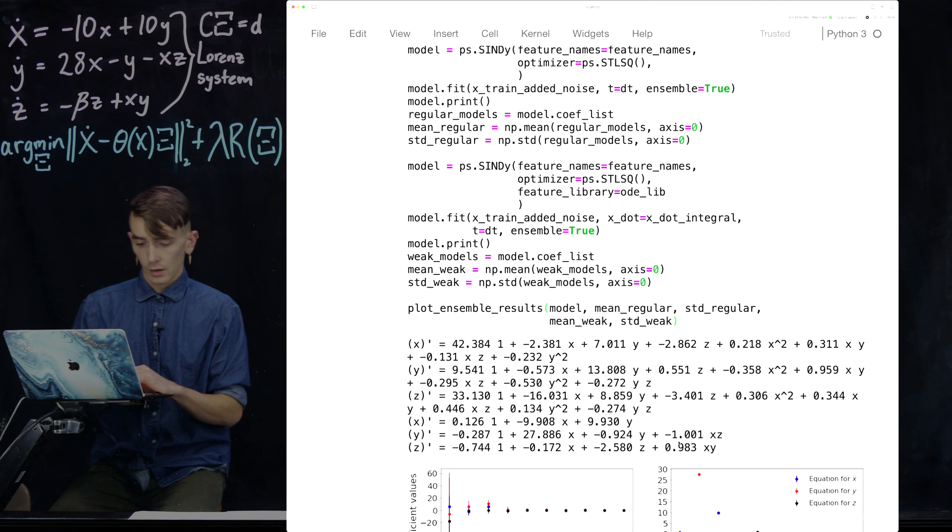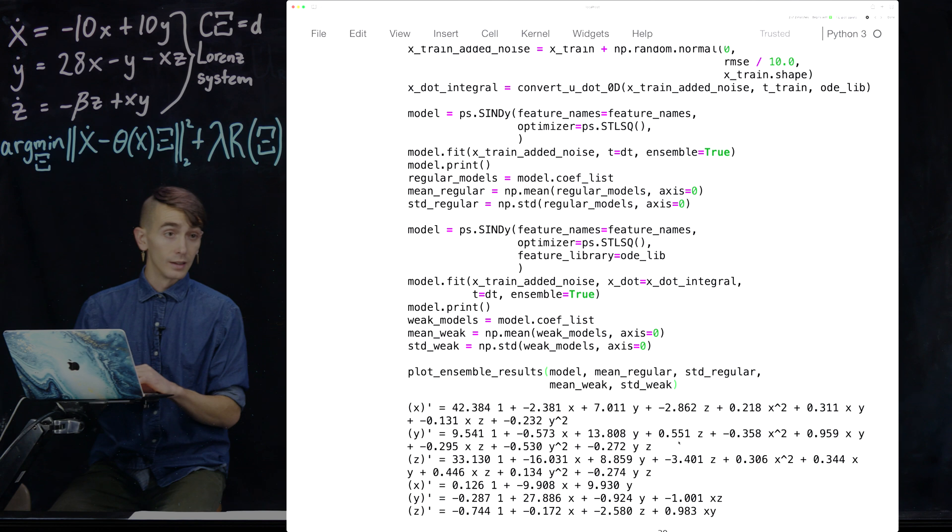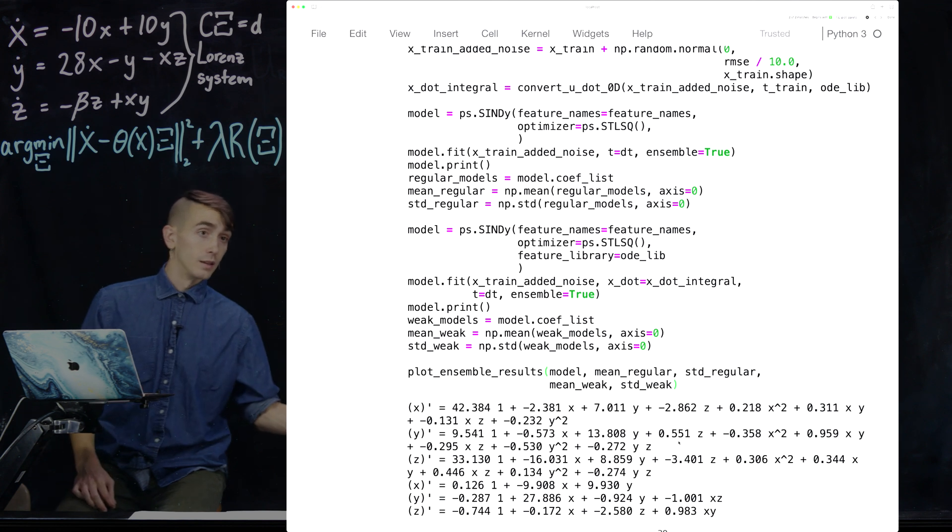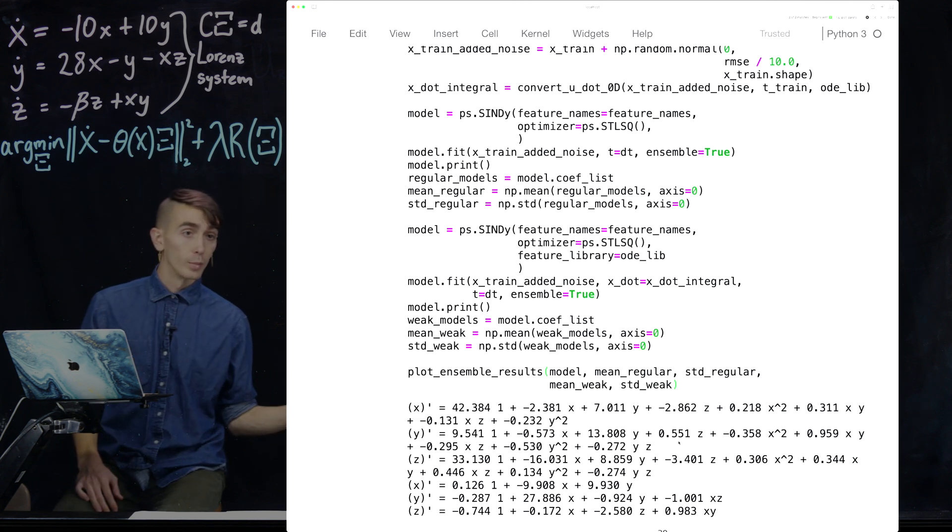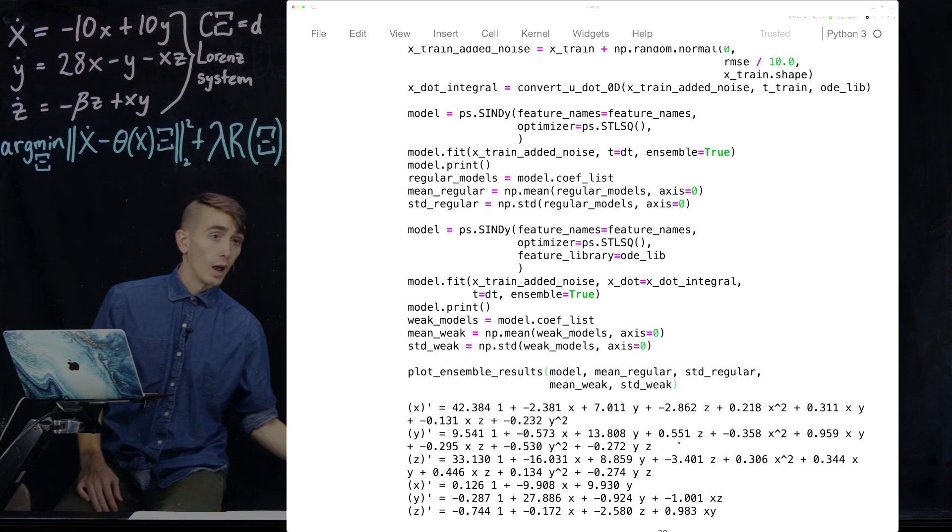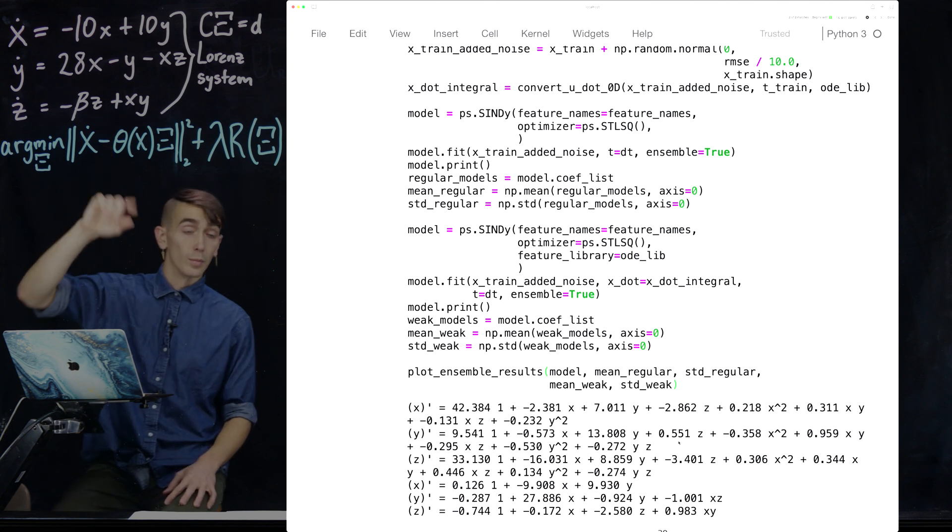First thing you might notice is that, before we even look at the plots, is that the xdot, ydot, and zdot for the regular Cindy model is doing very poorly. It is 10% Lorenz noise. It's very noisy data using finite differences. So the fit is totally off. It's totally screwing up all these coefficients. But the weak form is pretty much getting the model right. It's got a couple extra terms, but it's basically reproducing the model above.